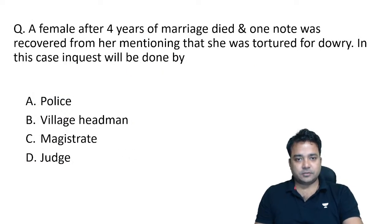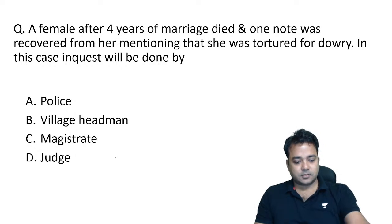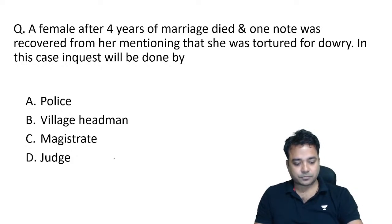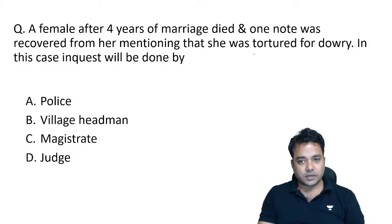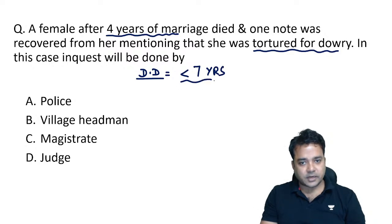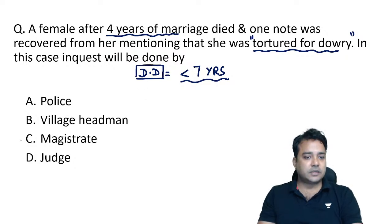A female after four years of marriage died, and a note was recovered mentioning she was tortured for dowry. In this case, inquest will be done by whom? The moment you see that the female was tortured for dowry and the death occurred after four years: dowry death is defined as death of a female within seven years of marriage, if proved that just before death she was tortured for dowry demand by husband or relative of husband. This is one of the cases investigated by a magistrate.